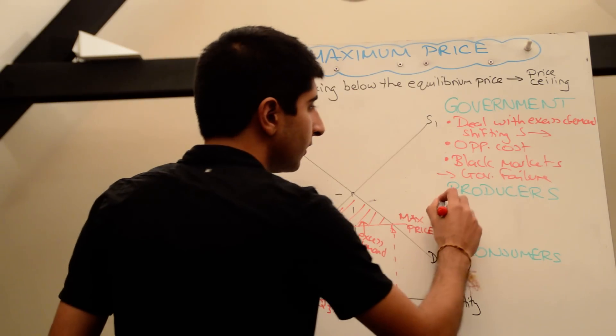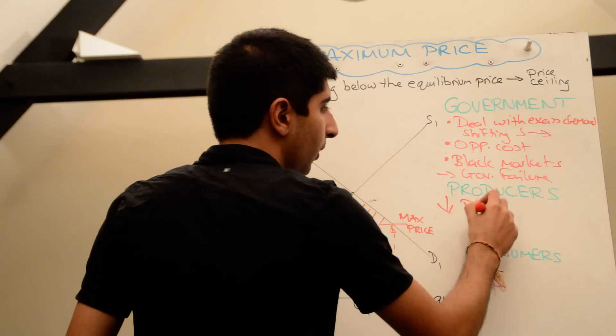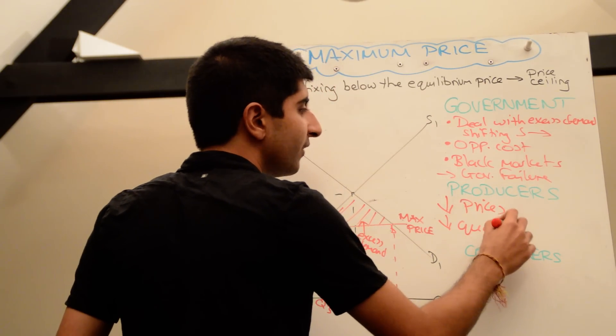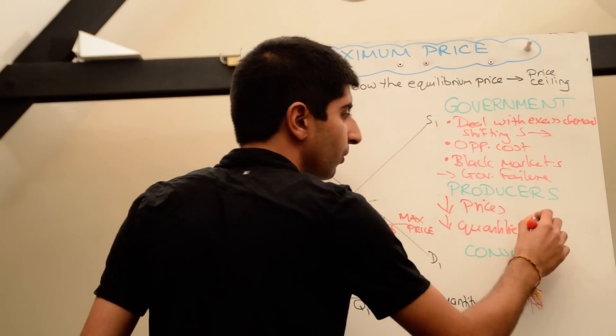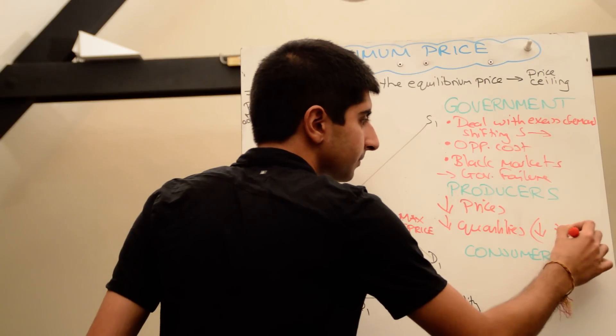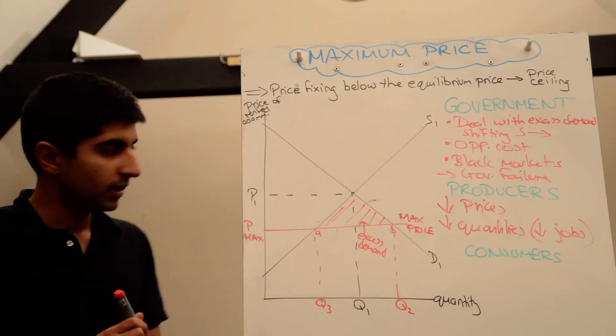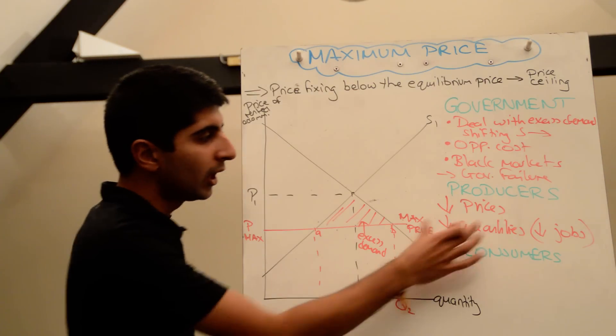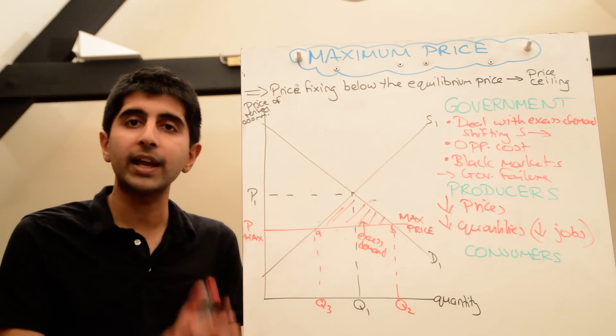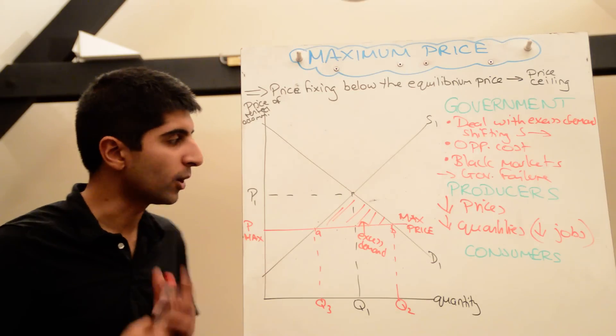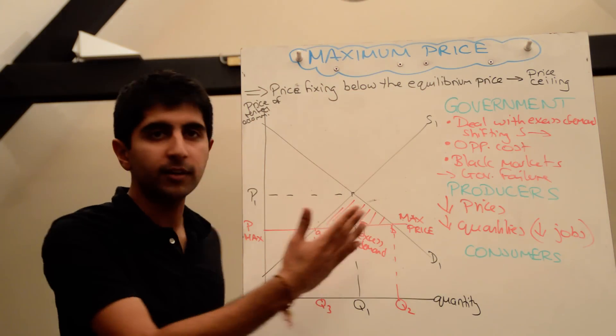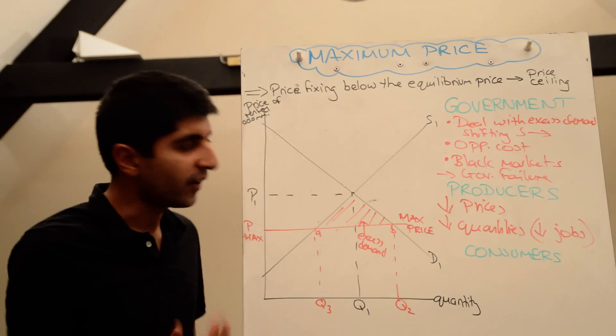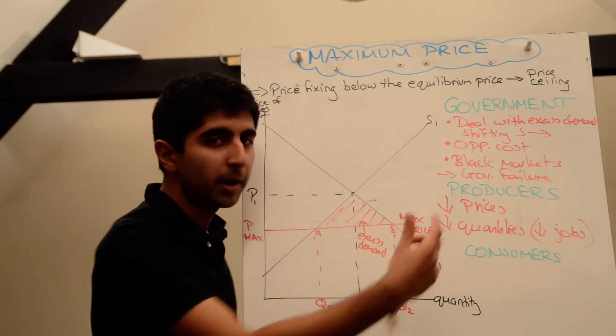Producers don't like this for two reasons. They suffer from lower prices and they produce less, lower quantities. And the fact that they produce less may also feed through into jobs. Lower prices means lower revenues, lower profits, lower incomes. Not good for them. Lower quantities implies that they have to cut back on jobs, and that can have a negative effect in the economy. Although, if the government does subsidize, if they manage to find a way to increase supply to get to Q2, then fair enough, that argument may well be limited.